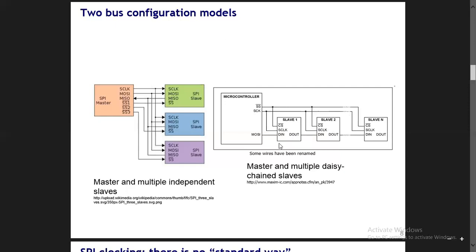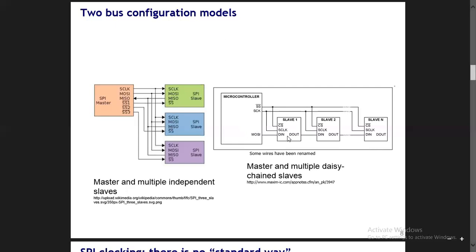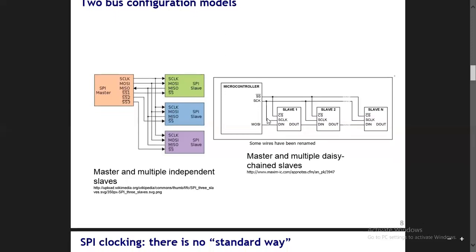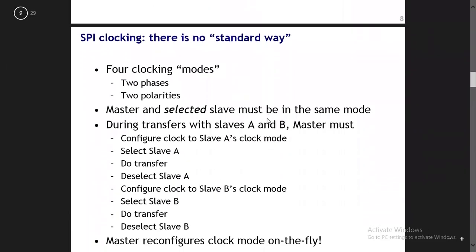There will be a considerable delay in data reception for slaves not directly connected to the master. Only the first slave directly connected receives data in the same time as we see in the independent slave case. This is how this specific daisy-chain configuration works. Generally, we have these two broad categories when it comes to connecting slaves with the master.